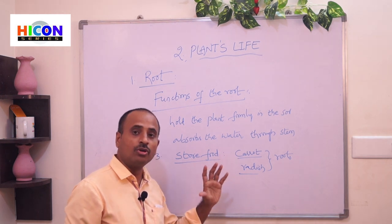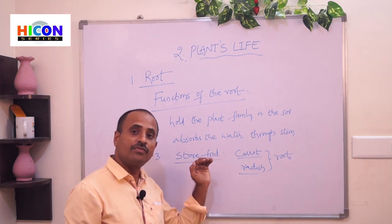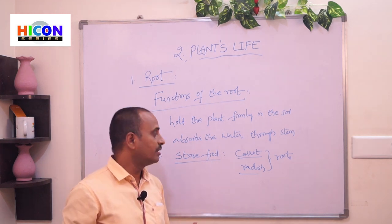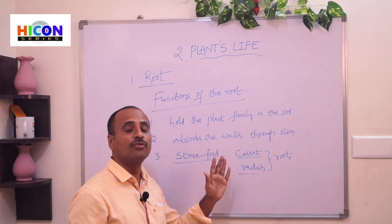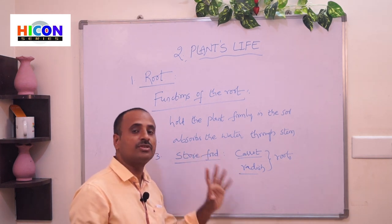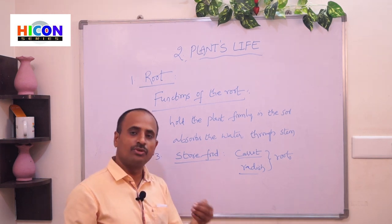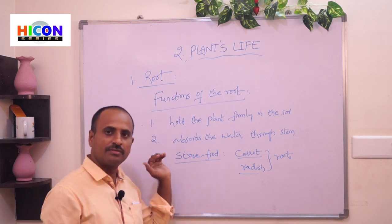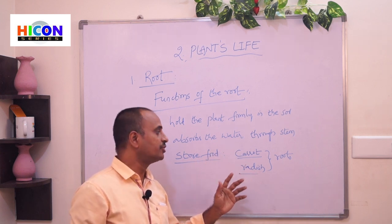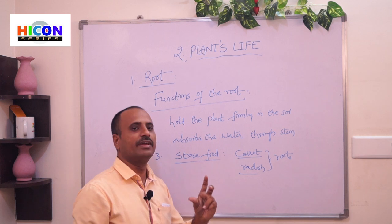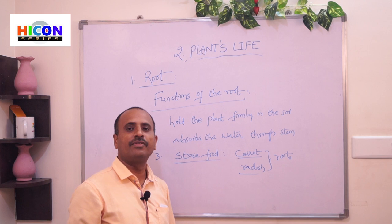Carrot and radish are the root parts of the plant — we use them as vegetables. They are not the fruit part; they are the root parts of the plant. They look very thick because they store food. Some roots store food, like carrot and radish, and we can cook and eat them as food.